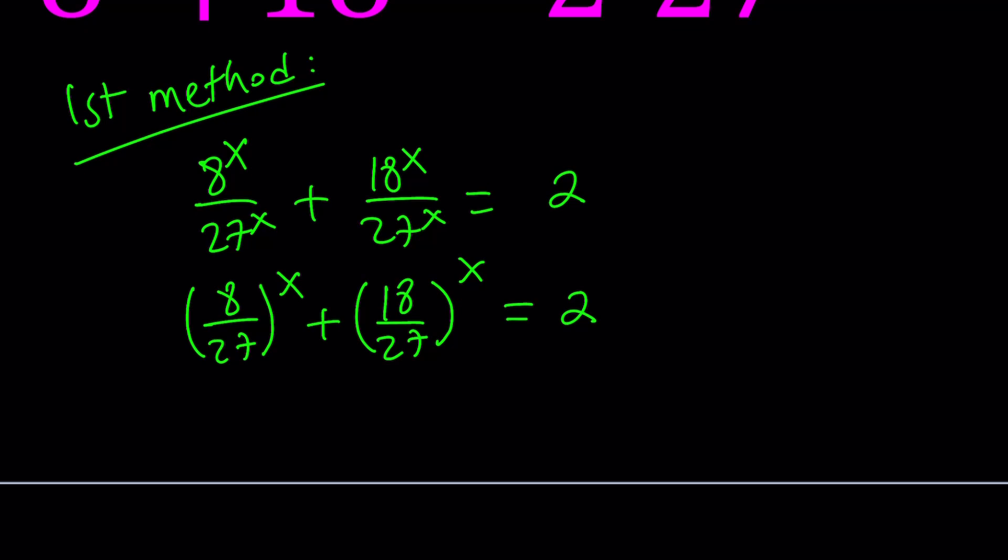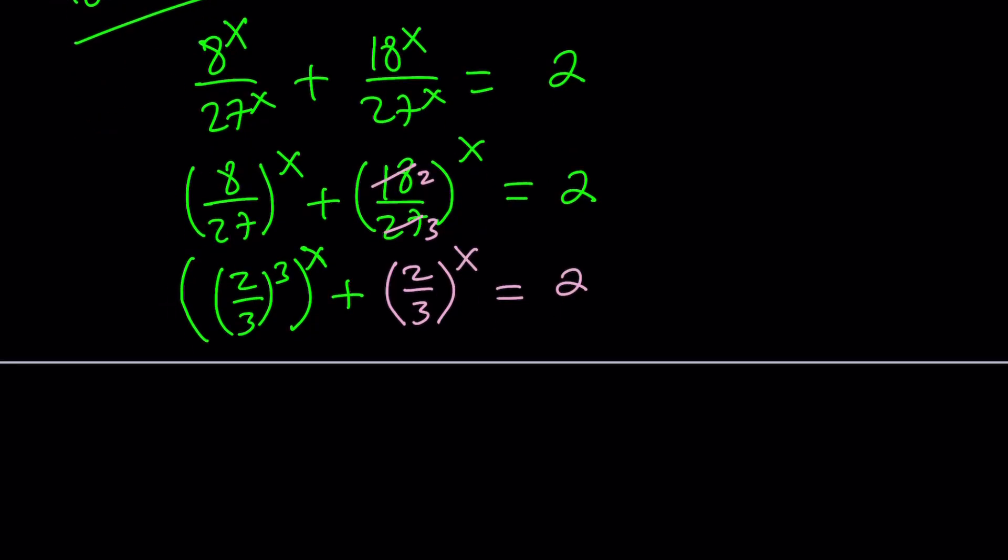And now notice that 8 over 27 is two-thirds to the third power, so we can kind of write it like that. And then 18 over 27 can be simplified. 9 is a common factor, so we can basically go ahead and divide by 9 and this becomes two-thirds. Here, we can basically switch these powers because they're supposed to be multiplied. So we can write it as two-thirds to the power x to the power 3 plus two-thirds to the power x equals 2.